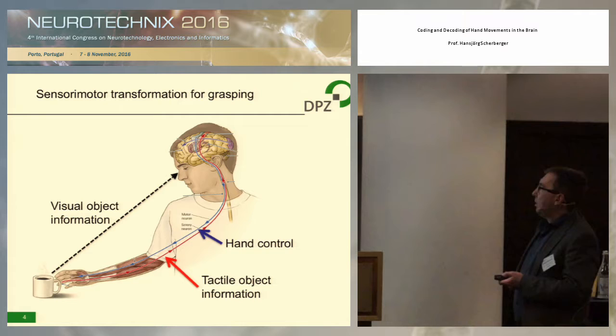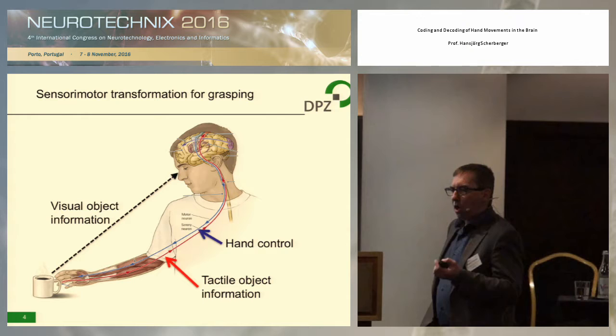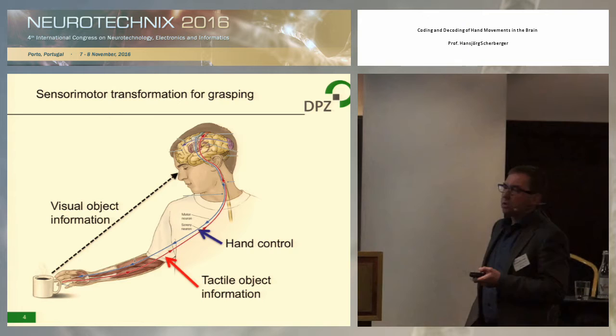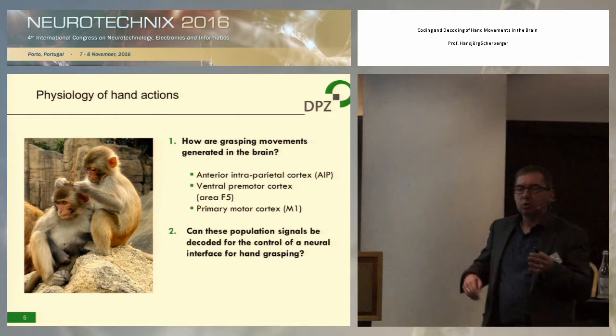How is the brain doing that? Which brain areas are involved? And how is this so-called sensory-motor transformation happening — going from sensory processing to the execution of an action? There are several brain areas involved in that, in the parietal cortex, the so-called anterior...